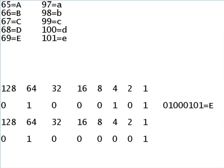The binary code for capital A is 0, 1, 0, 0, 0, 0, 0, 1. That's capital A.